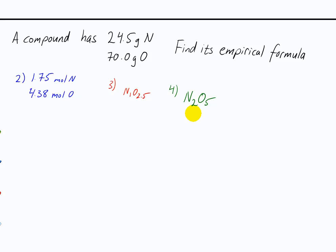Since the problem just says a compound with these masses, it could be N2O5, N4O10, or whatever — you'd need to know the molecular mass to get the molecular formula. But assuming this is actually the molecular formula, what would the name of this compound be? Dinitrogen pentaoxide. It's a covalent compound because it only has nonmetals — nitrogen and oxygen — so you name it with both prefixes indicating how much there is of each element.